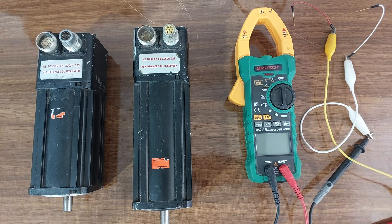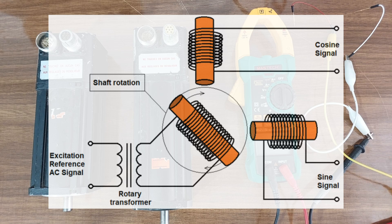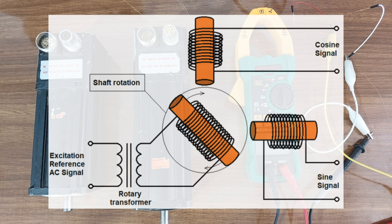So how can we test the resolver? First of all, let's review the structure of a resolver. As you can see in this figure, for a resolver we have one coil on the rotor core and two coils on the stator core — the sine coil and the cosine coil. The magnetic axis of the sine coil is perpendicular to the magnetic axis of the cosine coil, so the mutual inductance between the stator coils is zero.